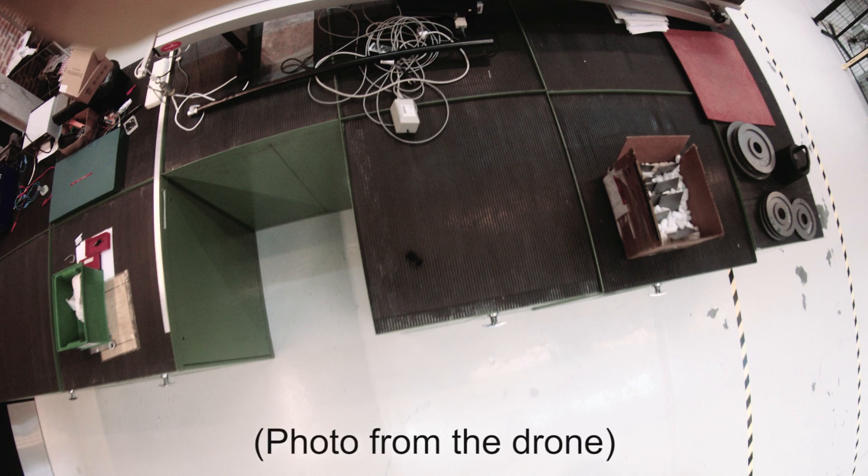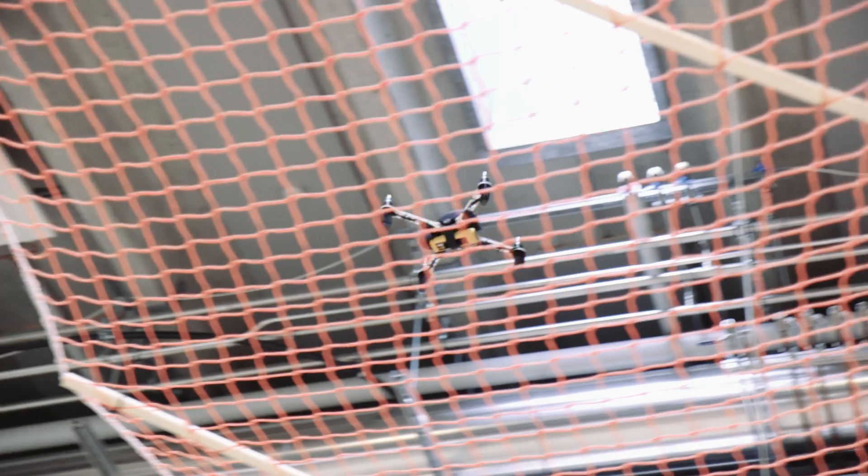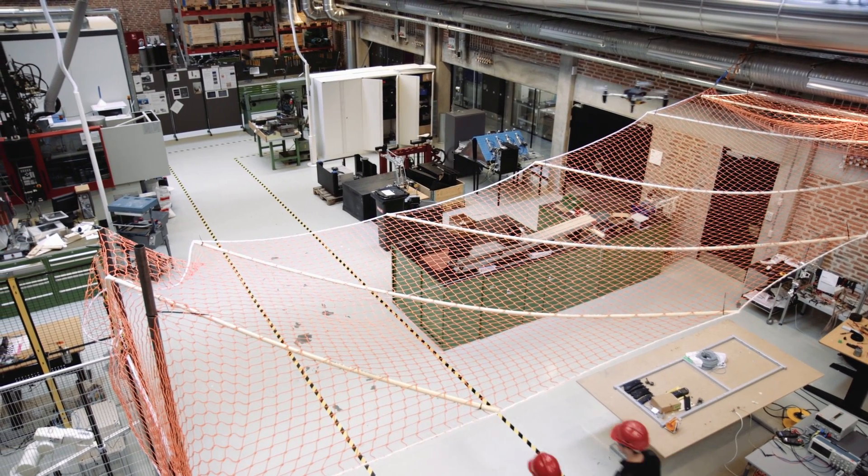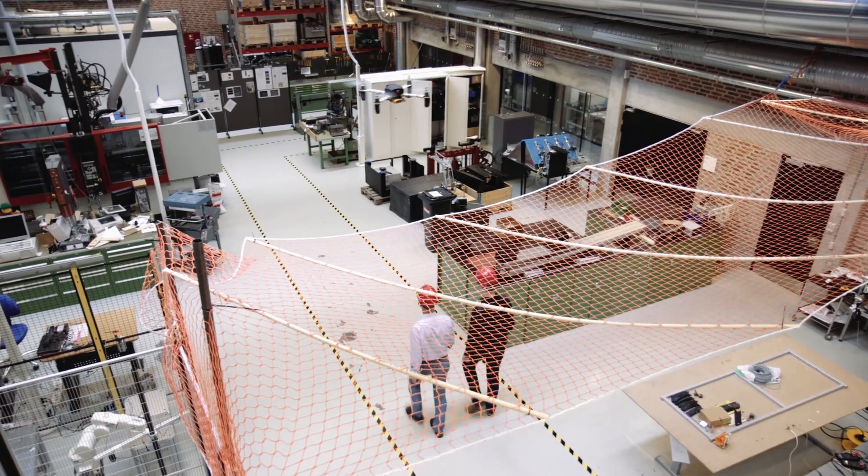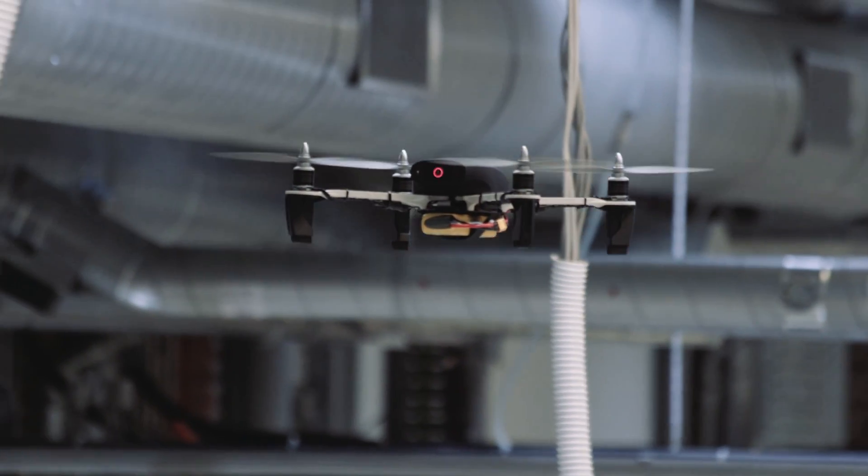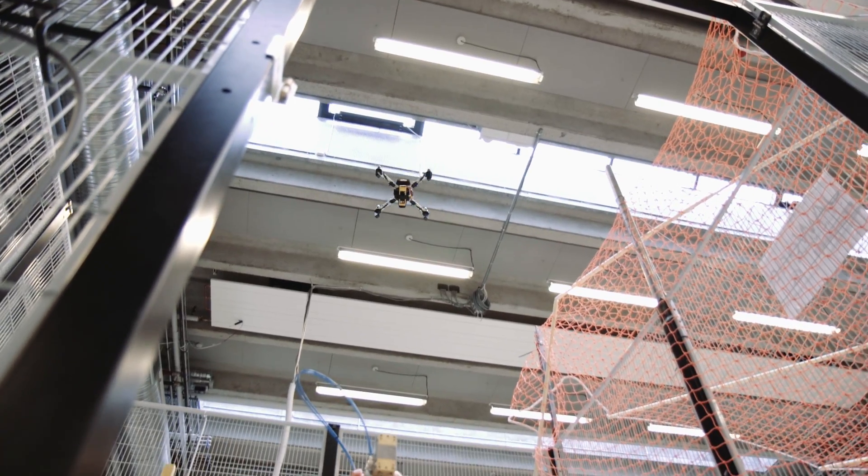On its way to the next task, the drone must cross an area where production personnel may be present. In this area, a protective net is in place to protect people in case of drone malfunction. The second task is to take a close-up photo of the operating robot.